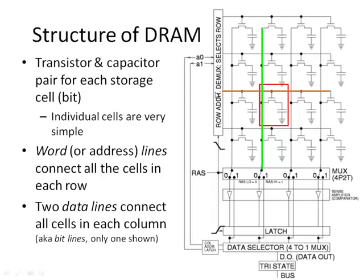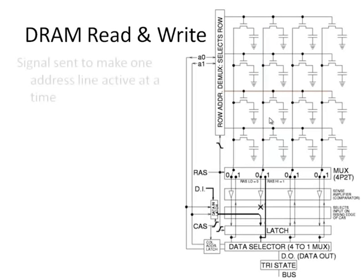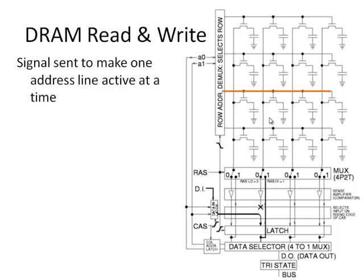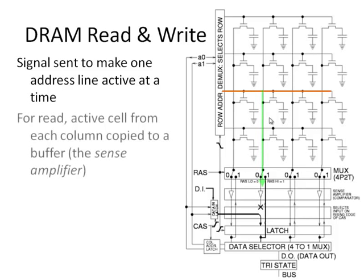If we know which address line and which column a cell is in, we can address and refer to that one cell. For reading and writing, a signal is sent to make one address line active at a time. When reading, we normally read a whole word at a time — one address line is made active and all of the bits are copied down simultaneously to the sense amplifier, which is essentially a buffer that stores the values copied from the RAM.